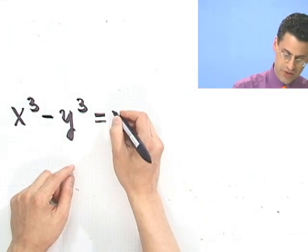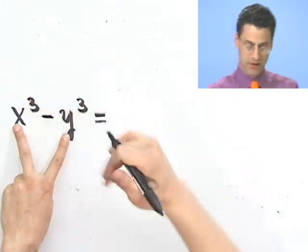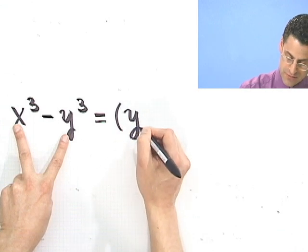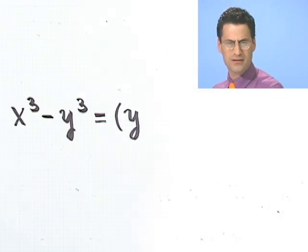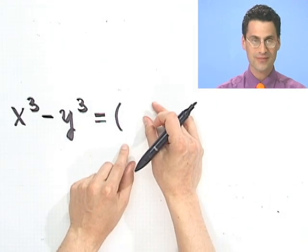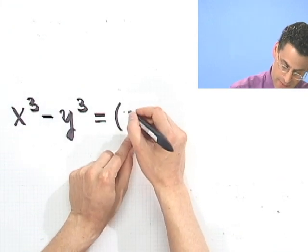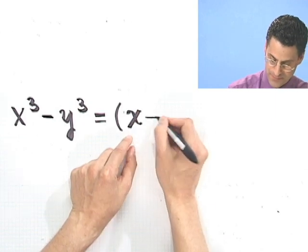One factor is always going to be just the thing itself without the cube. In fact, if you think about it, the same thing holds with the difference of two perfect squares. Let's put in here the x and then minus y.